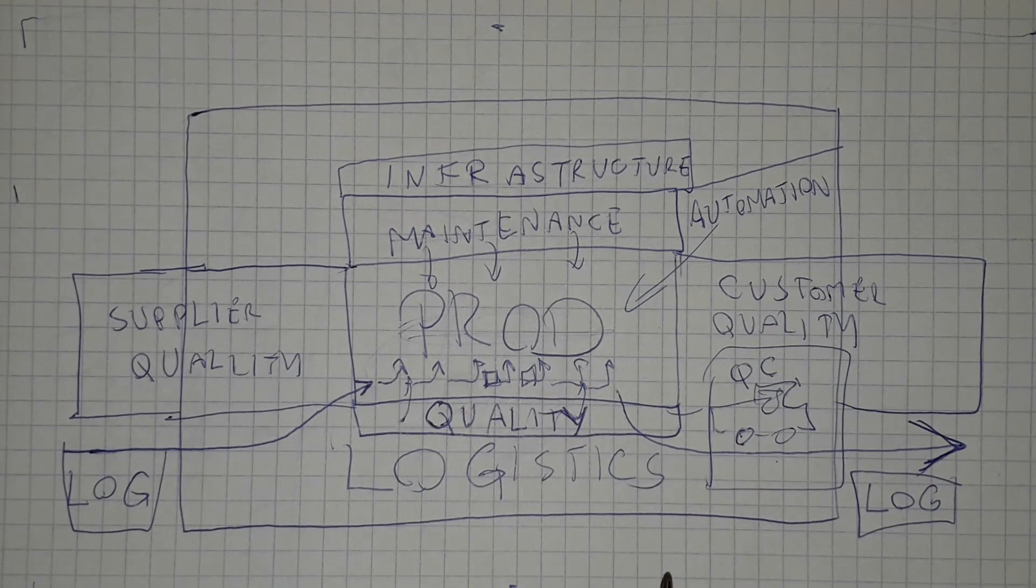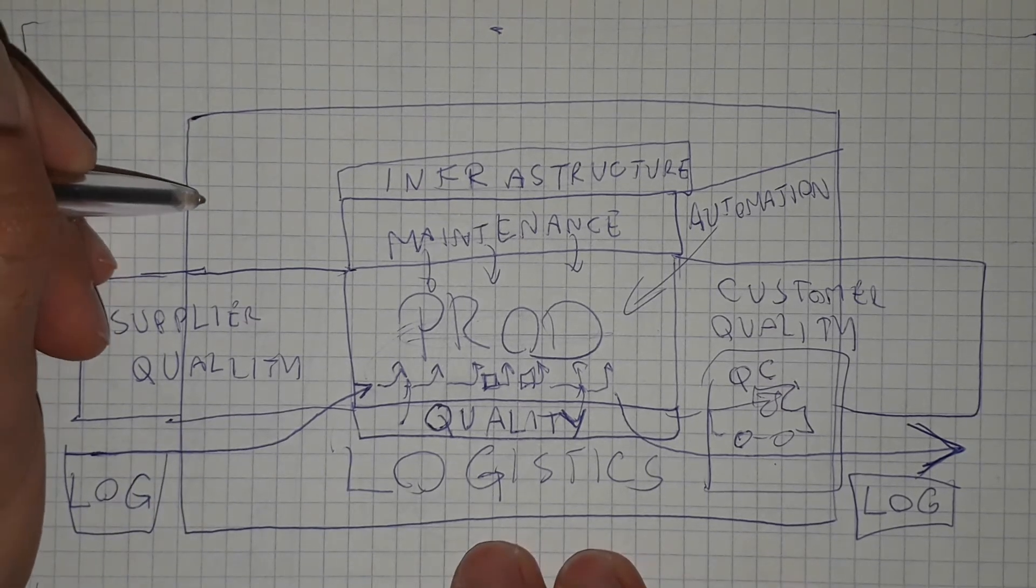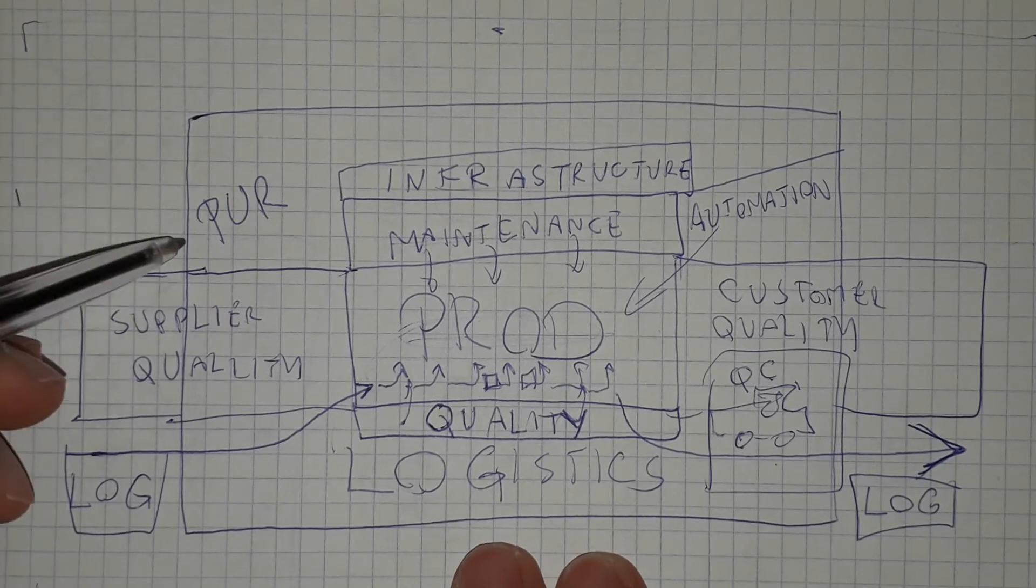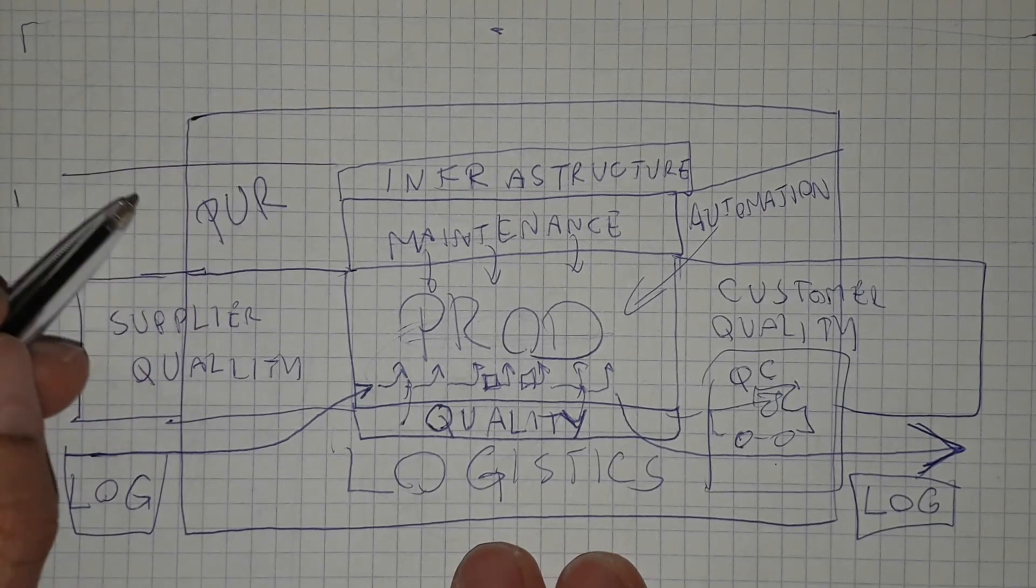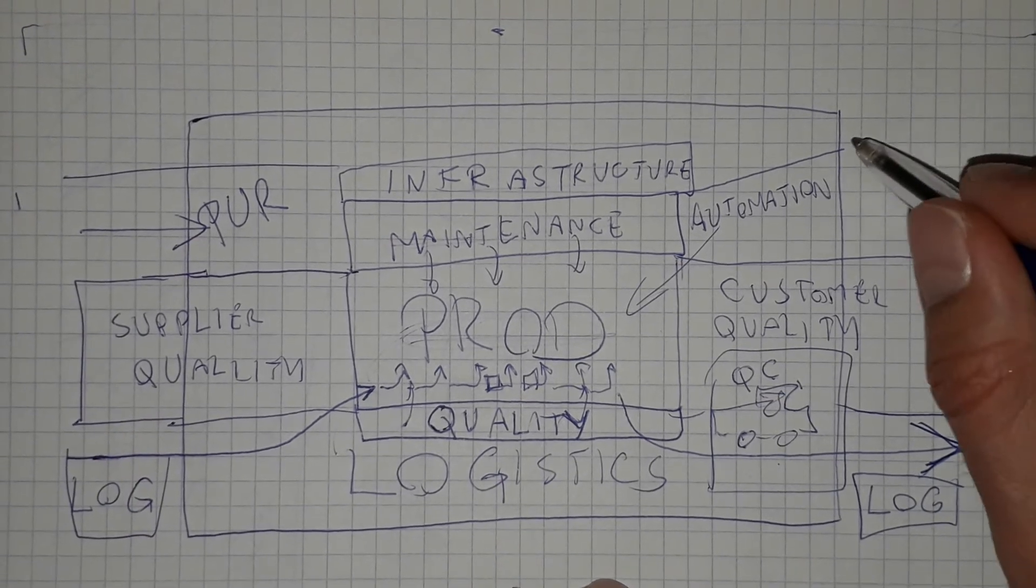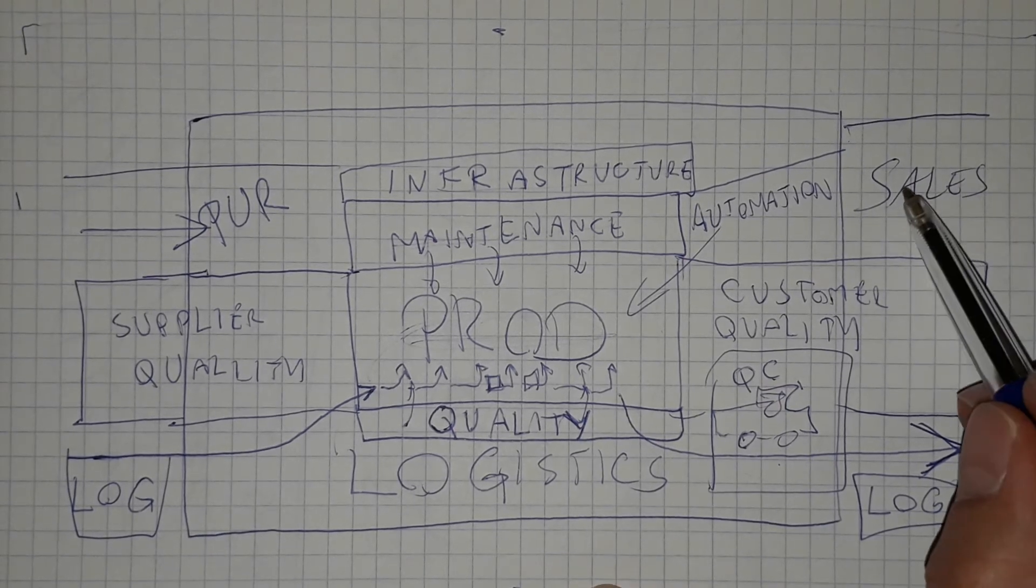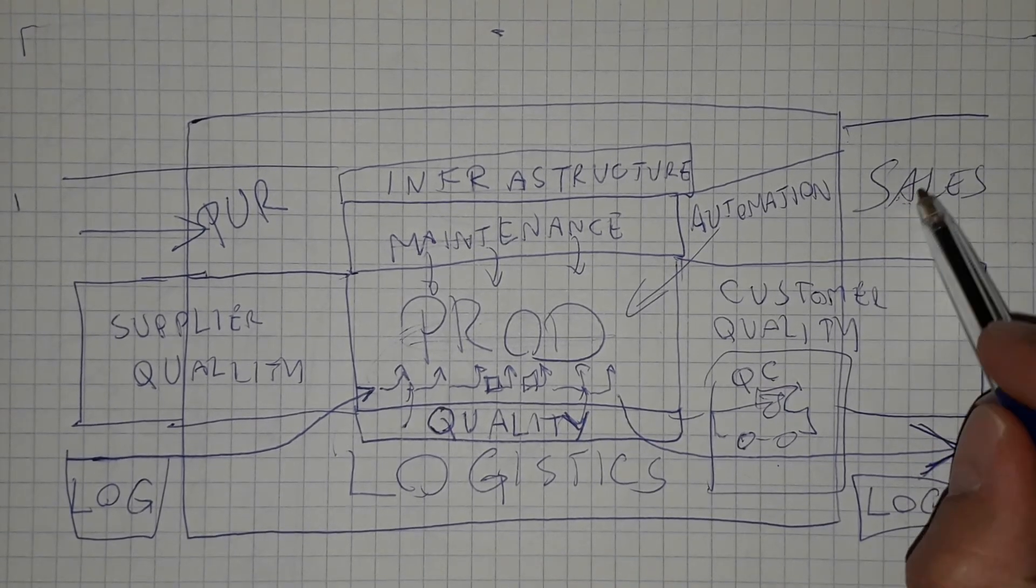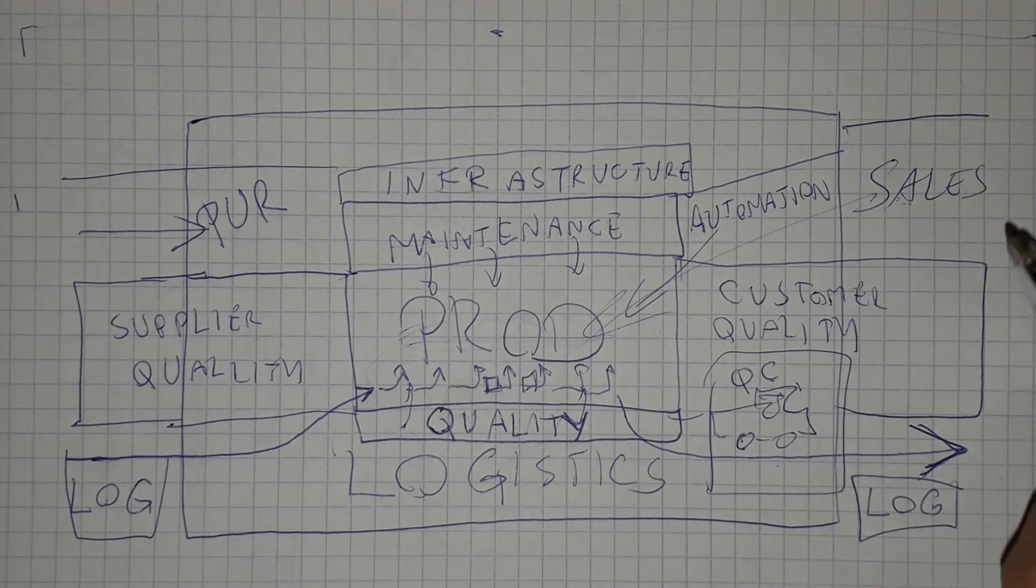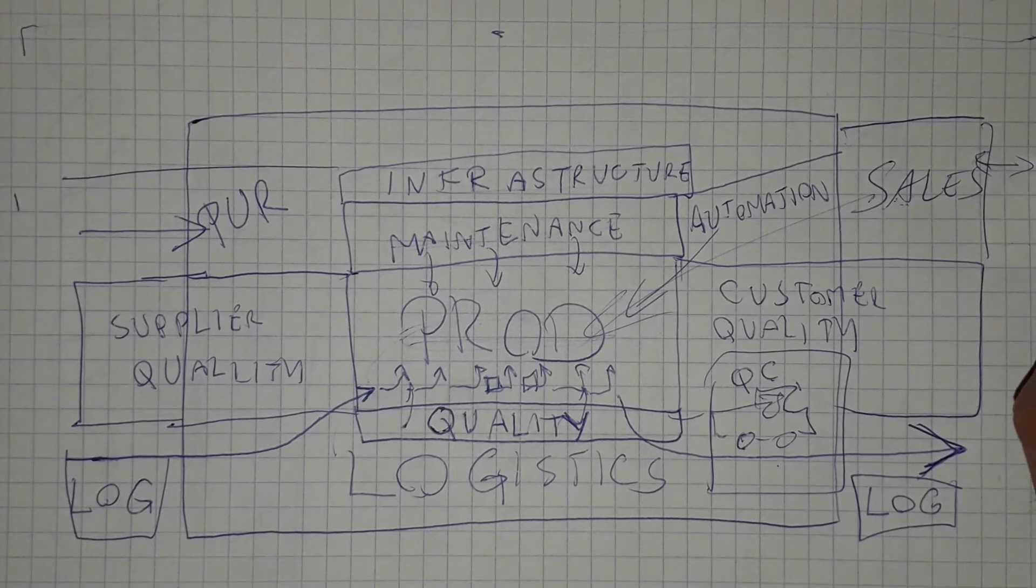Next part is more office. We need to have a purchasing department which is connected with suppliers of course. We need to have the sales department. They are dealing with the orders for the production, they are dealing with the customers, with the dealers, with the networks.